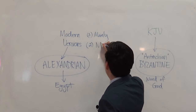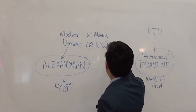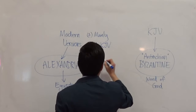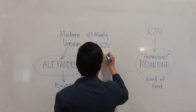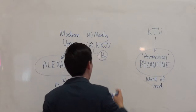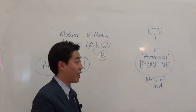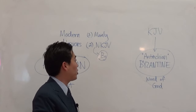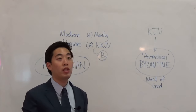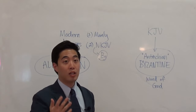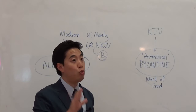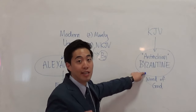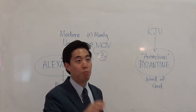One example is the NKJV — the New King James Version. They claim it came from the Antioch and Byzantine manuscripts. The way you can argue against modern versions that do come from this family yet are still wrong is simple: you pick out specific verses.